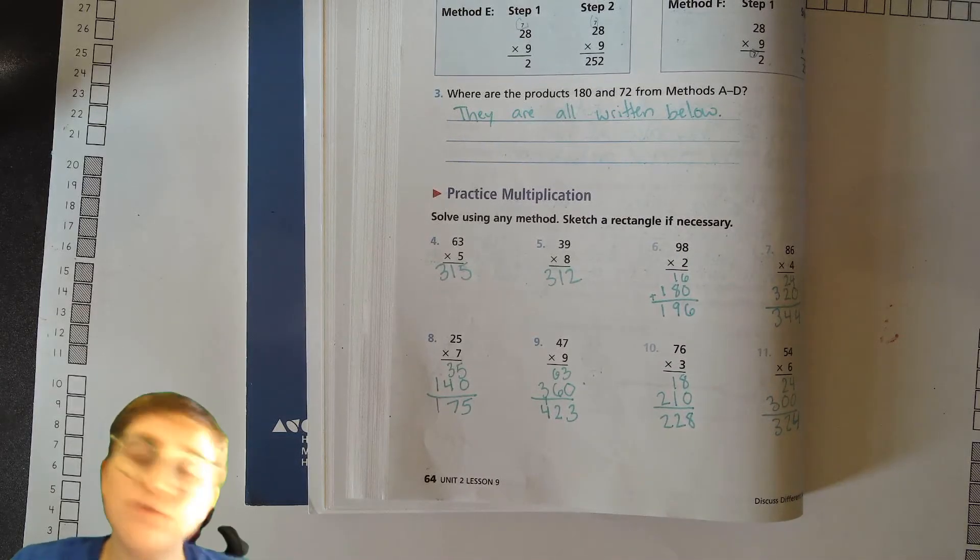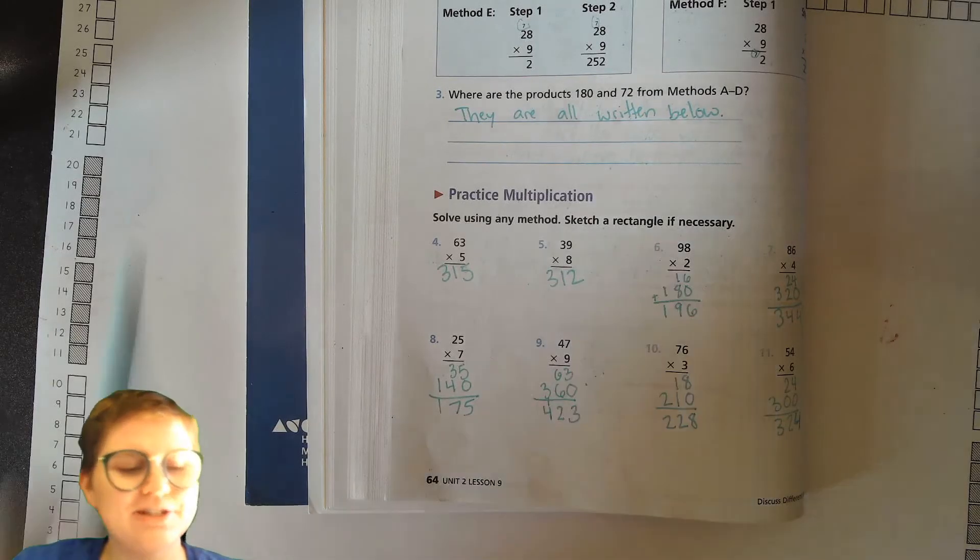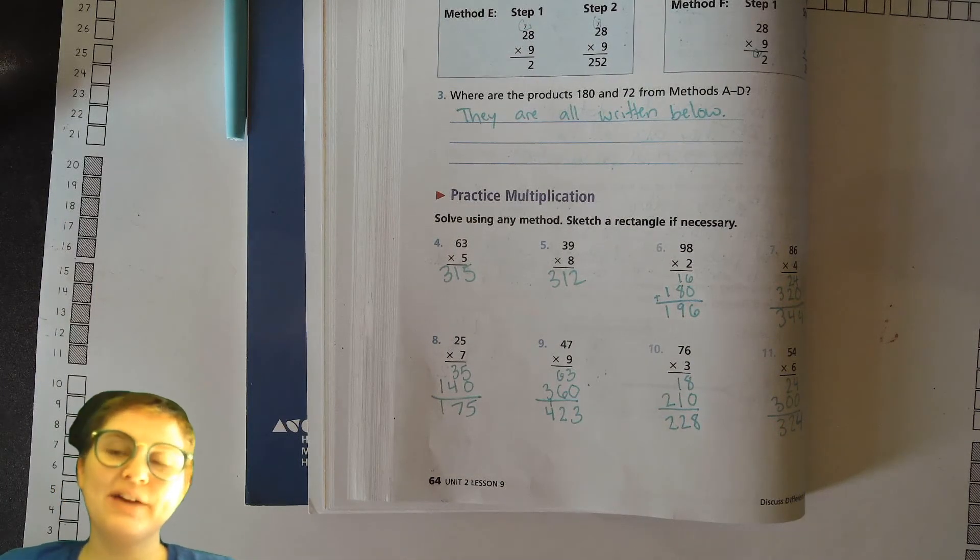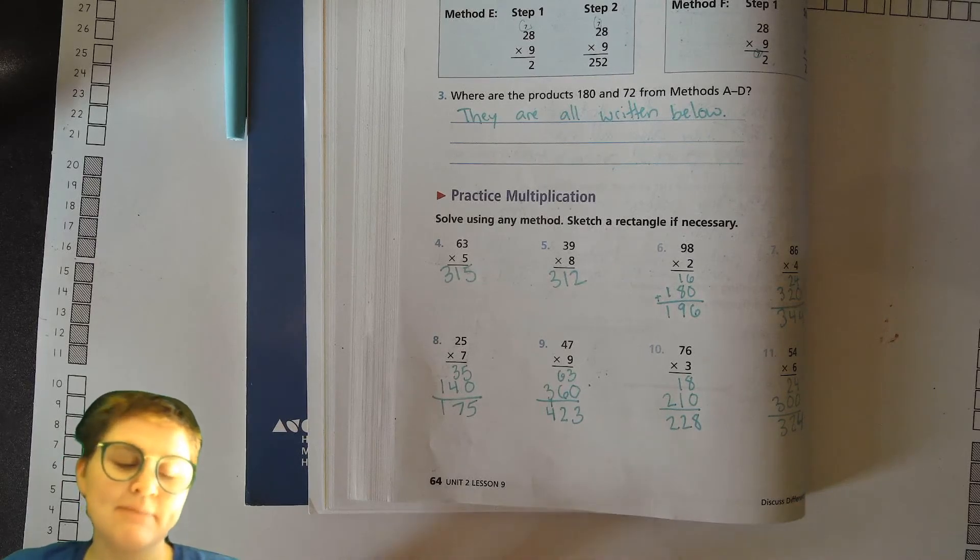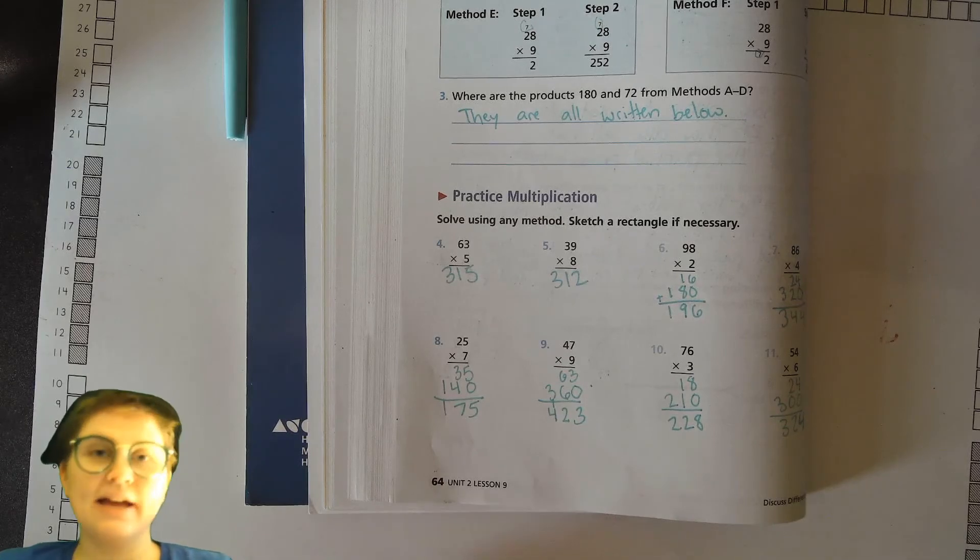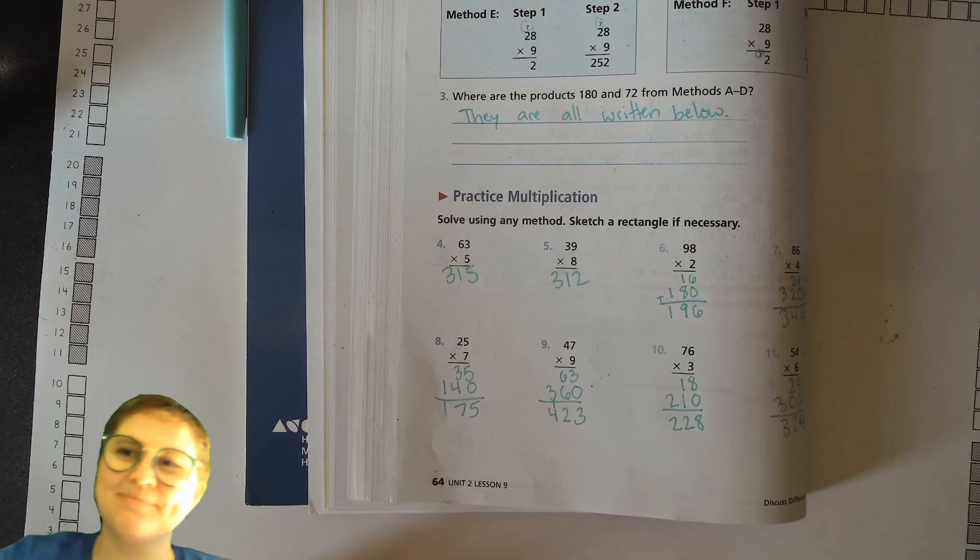All right, so hopefully you're starting to feel good about this double-digit multiplication that we're doing now. Very nice job, everybody. Go ahead and check and see if you have an assignment. Make sure you're also taking some time to practice your math fact fluency, and I'll catch you next time, all right? Bye-bye, everybody.